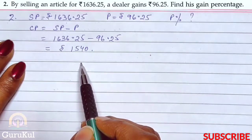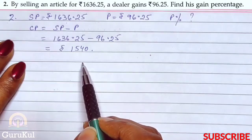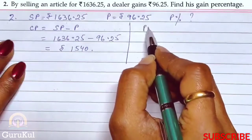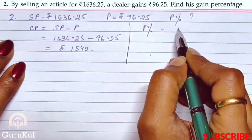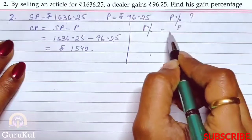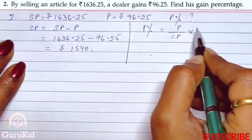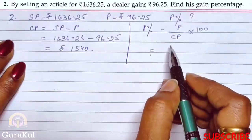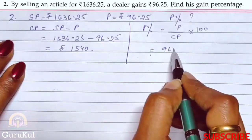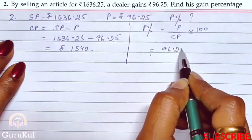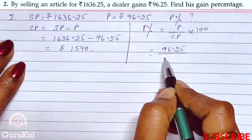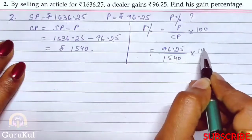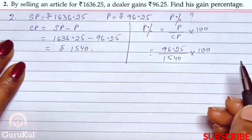Now we will find the profit percent. Profit percent is equal to profit divided by CP into 100. That is: 96.25 divided by 1,540, into 100.